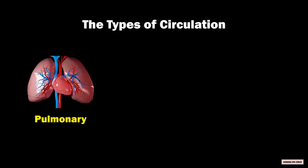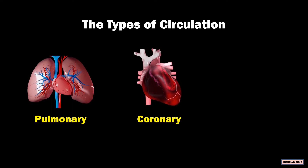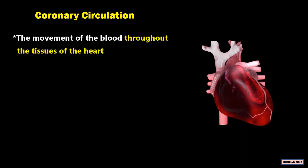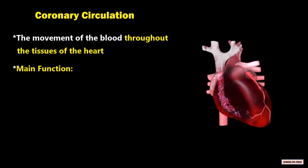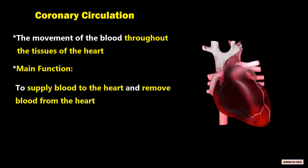The second circulation is coronary circulation. Coronary circulation is the movement of blood throughout the tissues of the heart. The main function is to supply blood to the heart and remove blood from the heart.